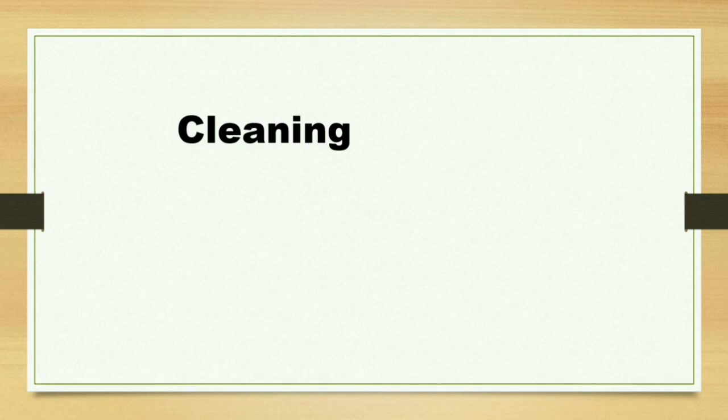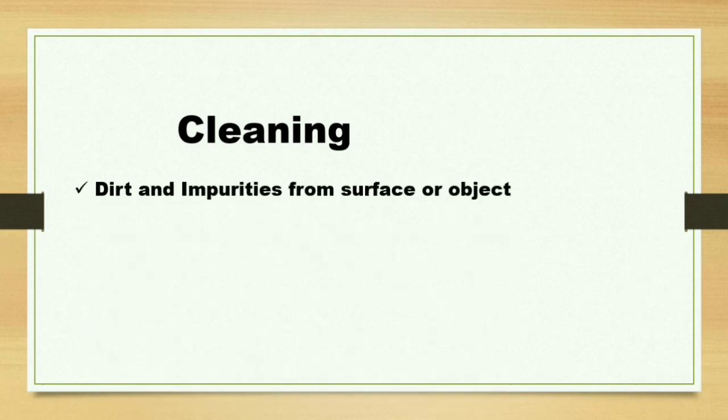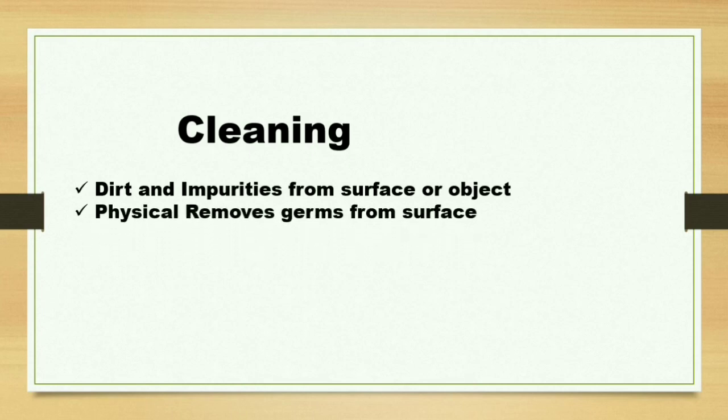First, let's talk about cleaning. Cleaning is the first and most important step for controlling the spread of infectious germs. Cleaning simply means the removal of dirt and impurities from the surface. In cleaning, we physically remove microorganisms from the surface. This process does not necessarily kill germs, but by removing them it lowers their numbers and the risk of spreading infections.